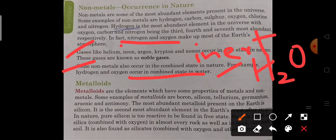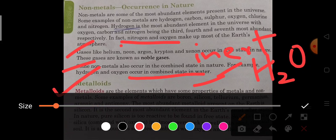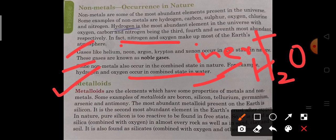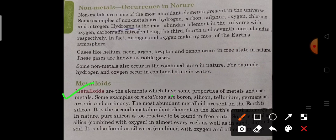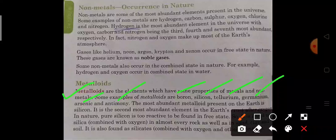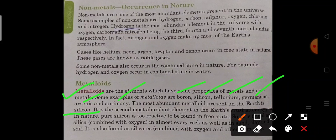Apart from metals and non-metals, the third category is metalloids. Metalloids are the elements which have some properties of metals and some properties of non-metals. Some examples of metalloids are boron, silicon, germanium, arsenic, antimony. The most abundant metalloid present on earth is silicon. It is the second most abundant element in the earth crust after oxygen.